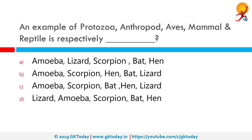An example of protozoa, arthropod, bird, mammal and reptile respectively is: amoeba is a single-cell protozoa, scorpion is an arthropod, hen is a bird, bats are mammals and lizards are cold-blooded reptiles.